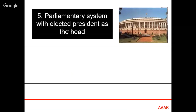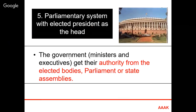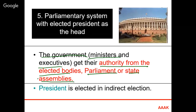The parliamentary system of government means the executive branch has direct or indirect support of parliament, usually by a vote of confidence. The person enjoying the confidence of parliament becomes the prime minister. In a presidential system, the president is directly elected by the people. In the parliamentary system, ministers and executives derive their authority from elected bodies — parliament and state assemblies. Even the president is elected by indirect election.